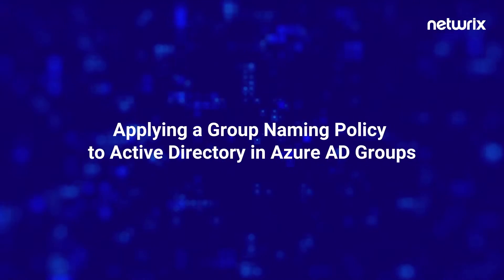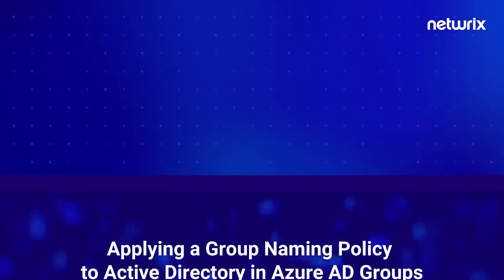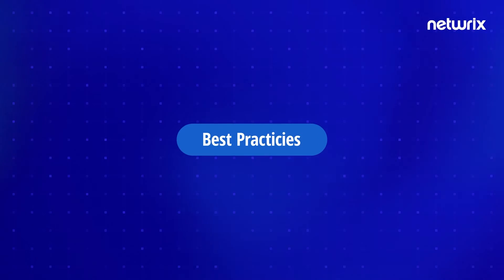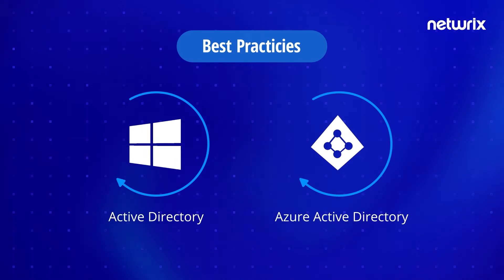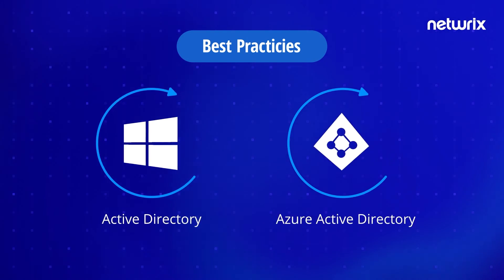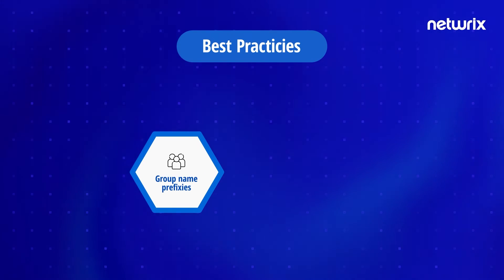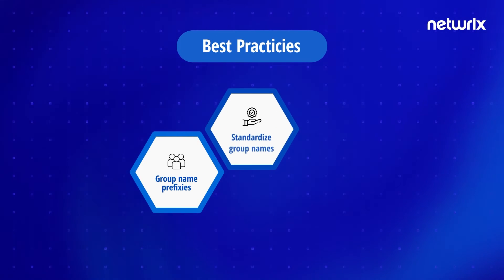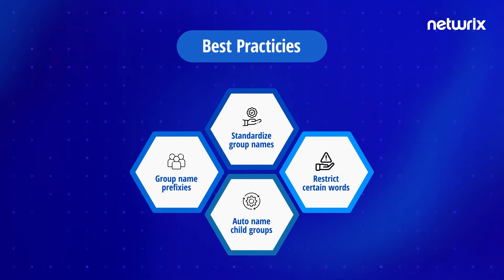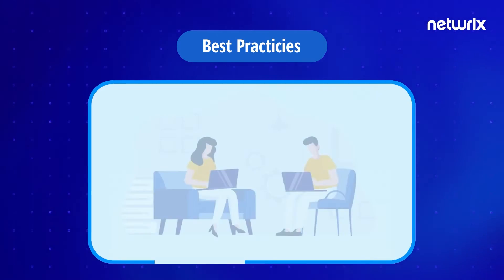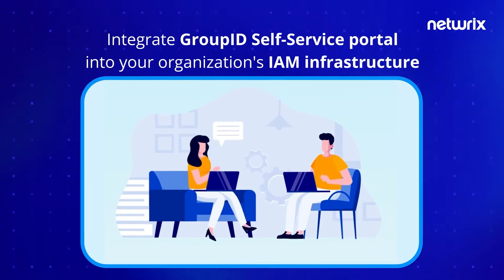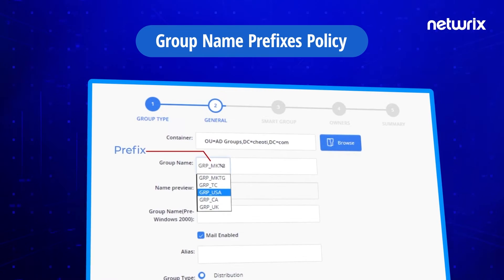One of the most effective ways to enforce Active Directory and Azure AD group naming convention best practices, especially when you delegate group creation to end users, is by implementing the following group naming policies: define group name prefixes, standardize group names using regular expressions, auto-name child groups using a naming template, and prevent users from using certain words in group names. One of the most efficient ways to implement these policies is to integrate the Group ID self-service portal into your organization's IAM infrastructure.